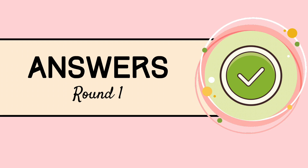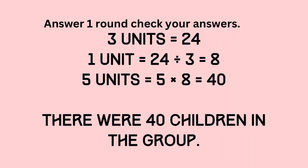Time to check your answers for round one. Three units equals 24. One unit equals 24 divided by 3, which equals 8. Five units equals 5 times 8, which equals 40. There were 40 children in the group.